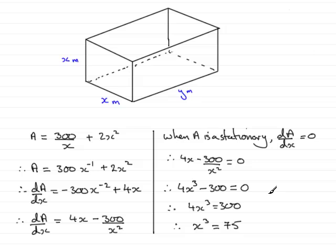To find x, I take the cube root of 75. This gives x = ∛75 = 4.21716...